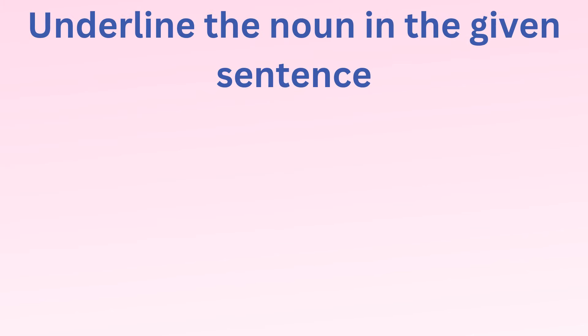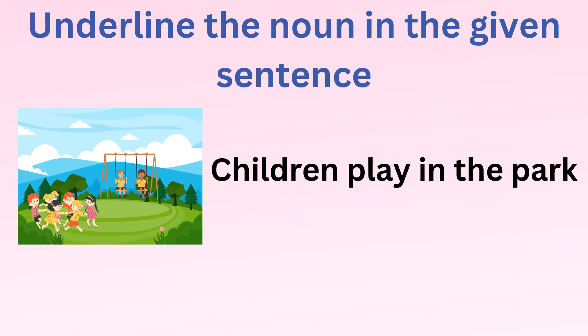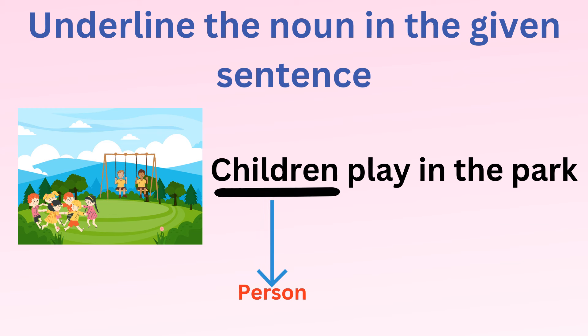Let's underline the noun in the given sentence. Children play in the park. Children are the persons, and park is the name of the place.